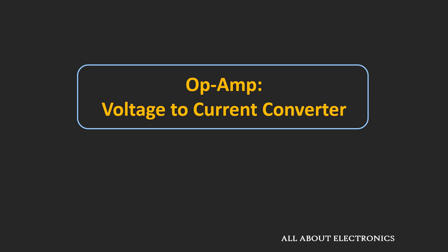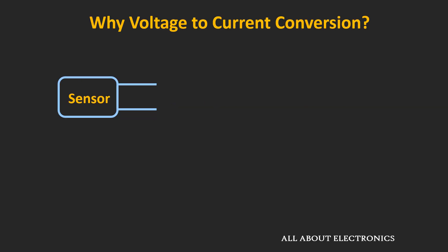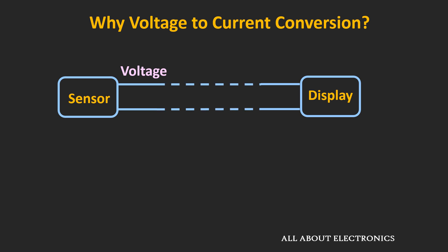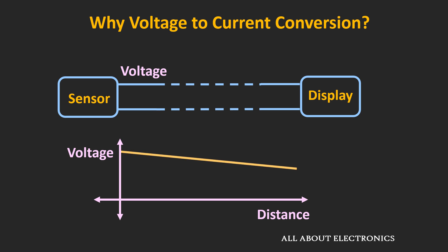Before we understand that, first of all let us understand what is the need of this voltage to current conversion and why these types of circuits are used. This type of circuit is particularly useful in industrial applications as well as in instrumentation. Let's say you are measuring some parameter like temperature using a sensor, and the sensor is giving output in terms of voltage. In industrial applications, it is quite possible that the location where the sensor is measuring that parameter and the location where the value is being displayed are quite far away from each other. The voltage generated by the sensor needs to be transported to the other end, and you will find that there will be a drop in the voltage, because during transportation there will be a voltage drop across the cable. Moreover, it is quite possible that noise will get superimposed over this voltage. So this is the basic problem in industrial applications when you are dealing with voltages.